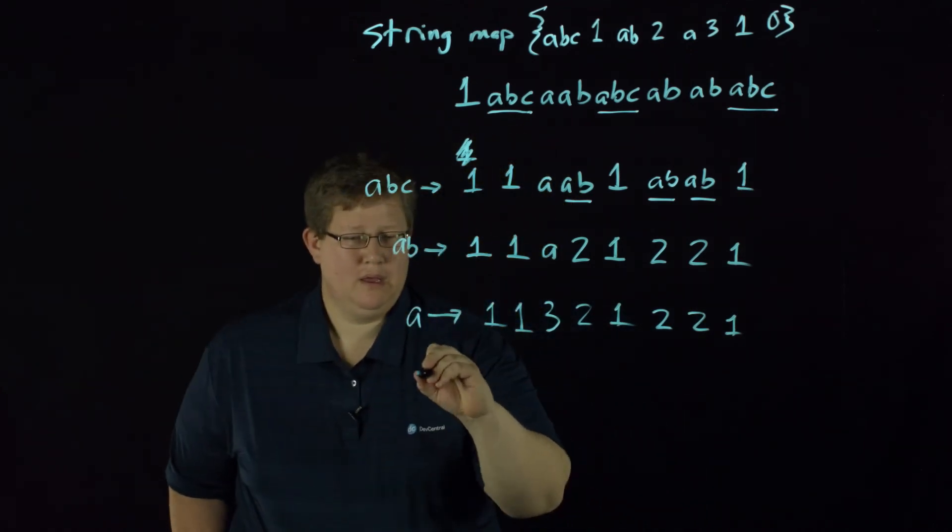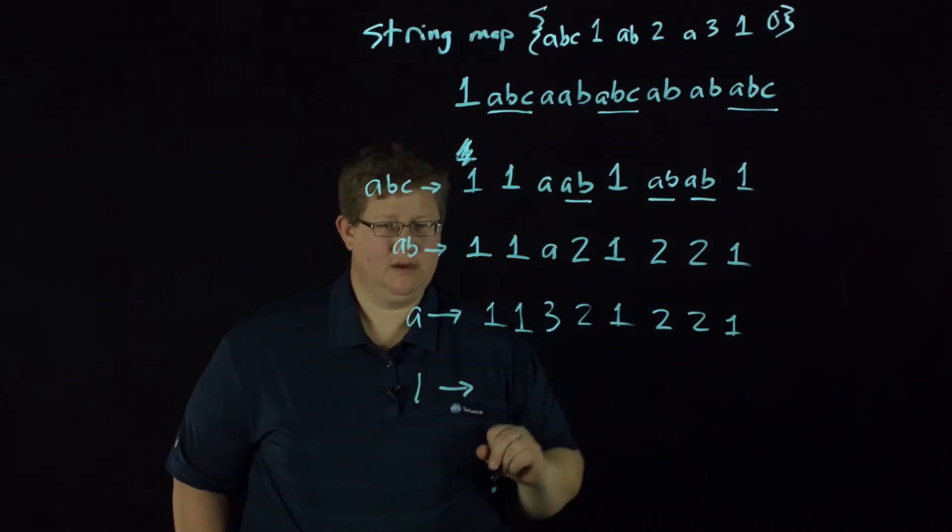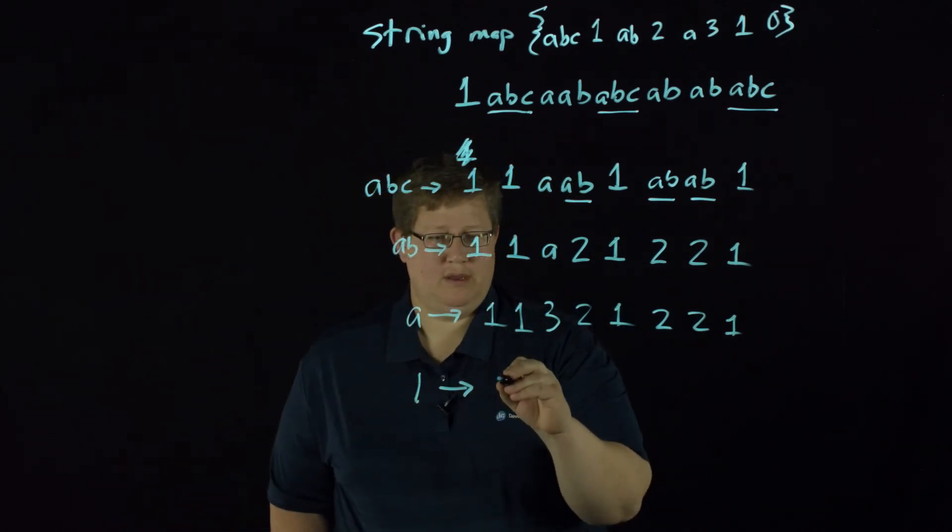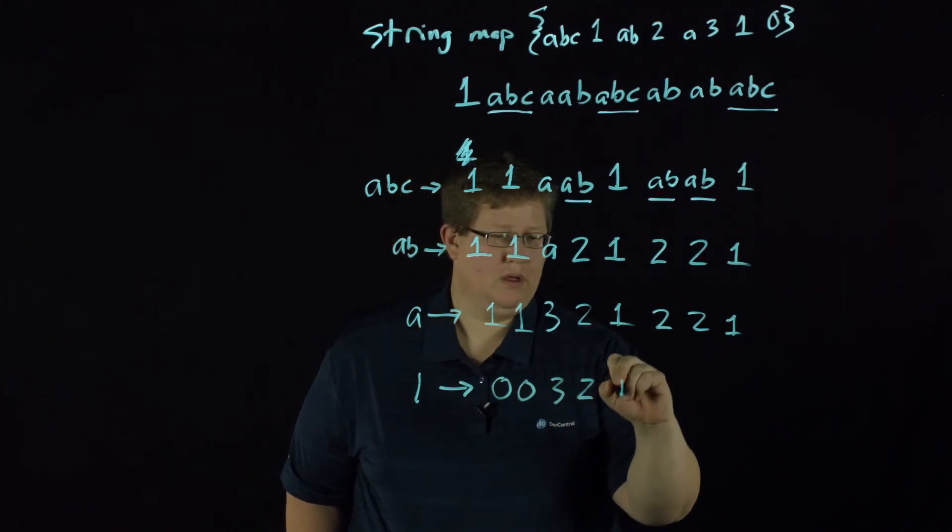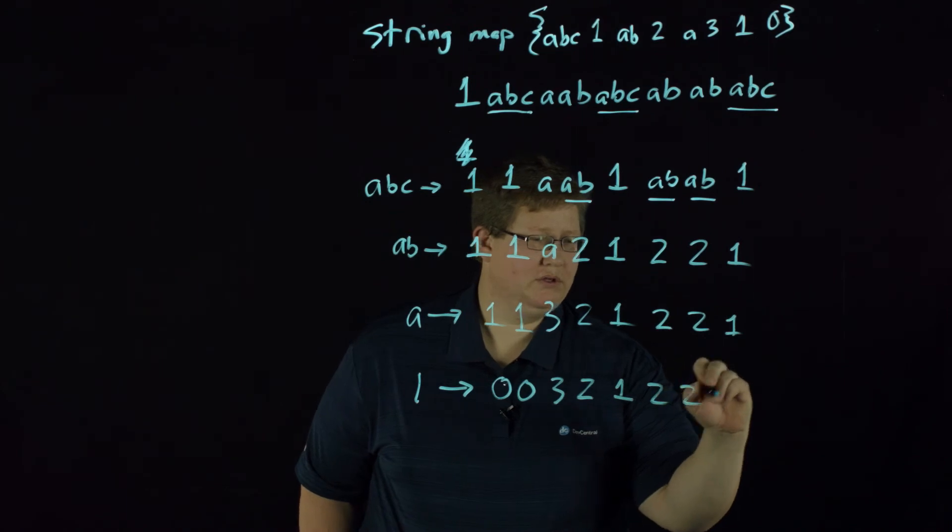And then finally we have our one mapping to zero. And so we can look at one as zero zero zero three two one two two zero and then zero.